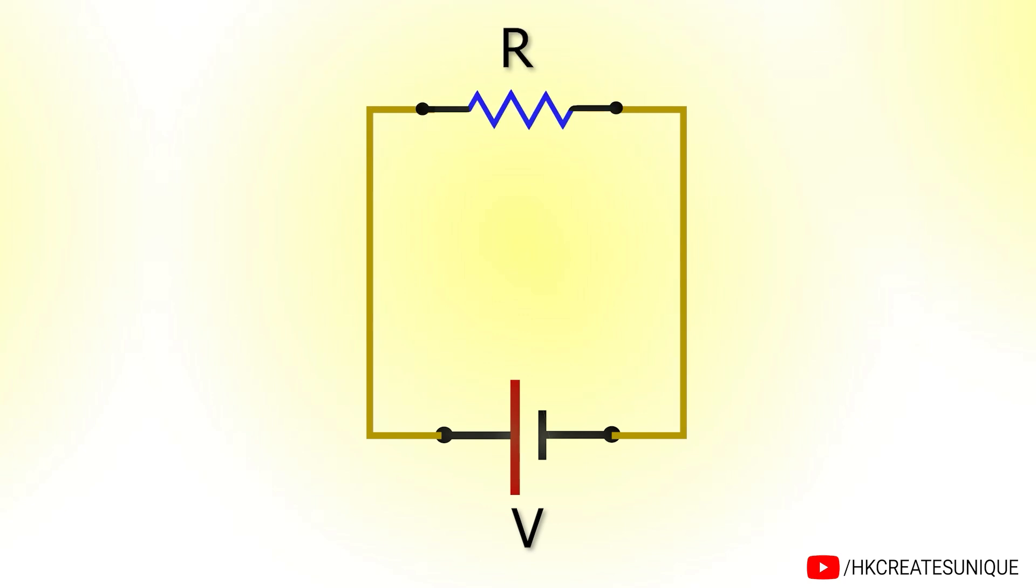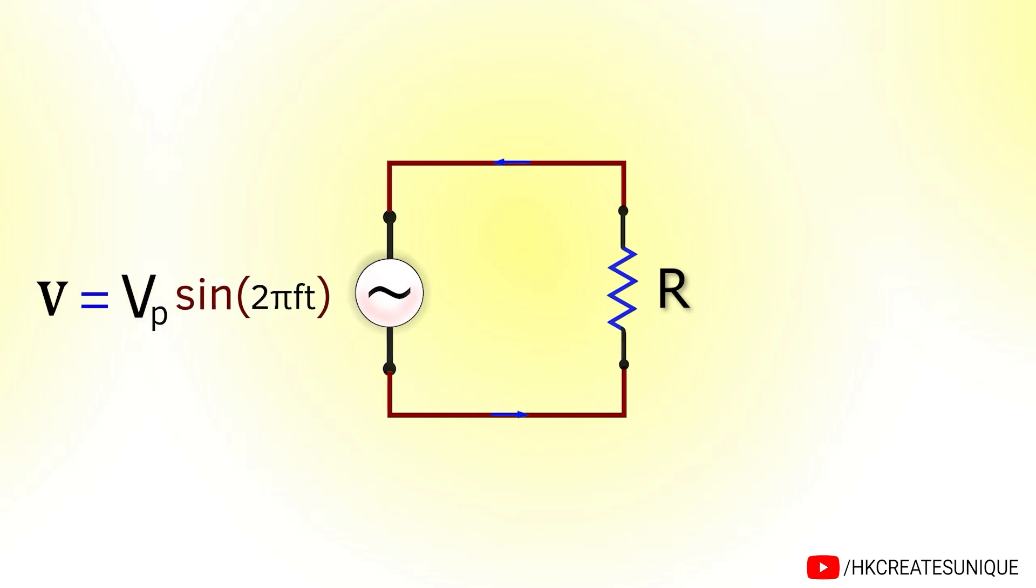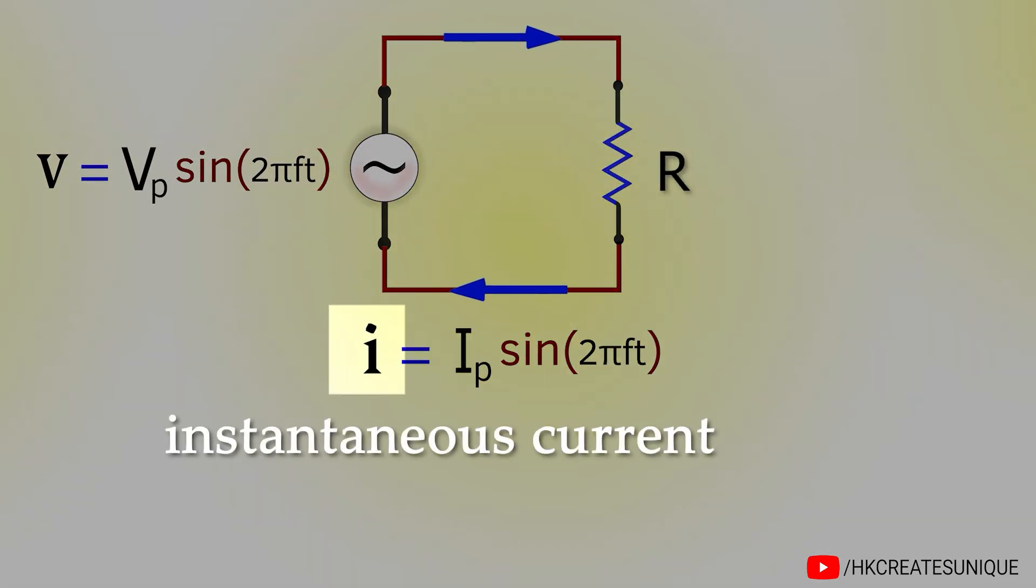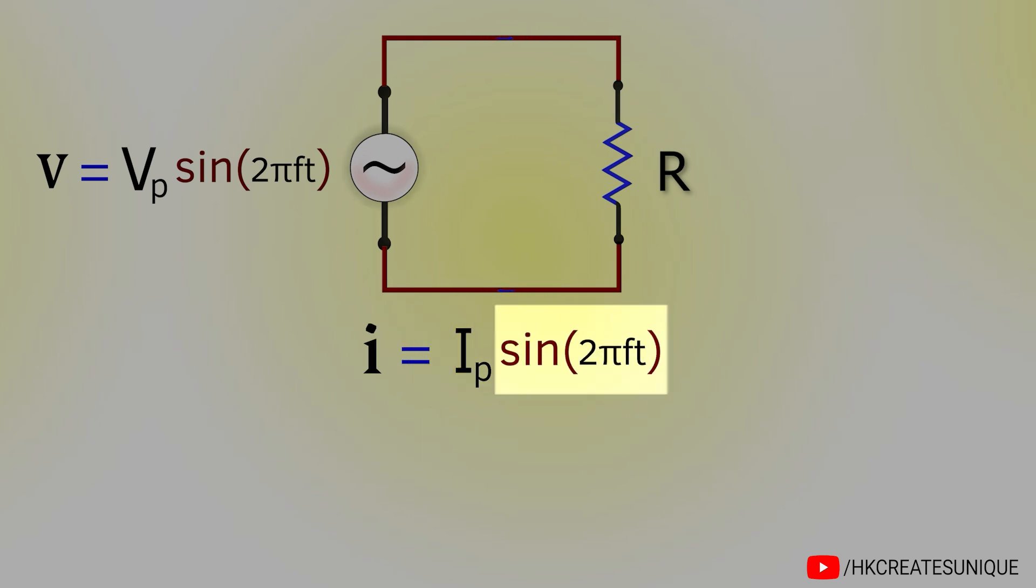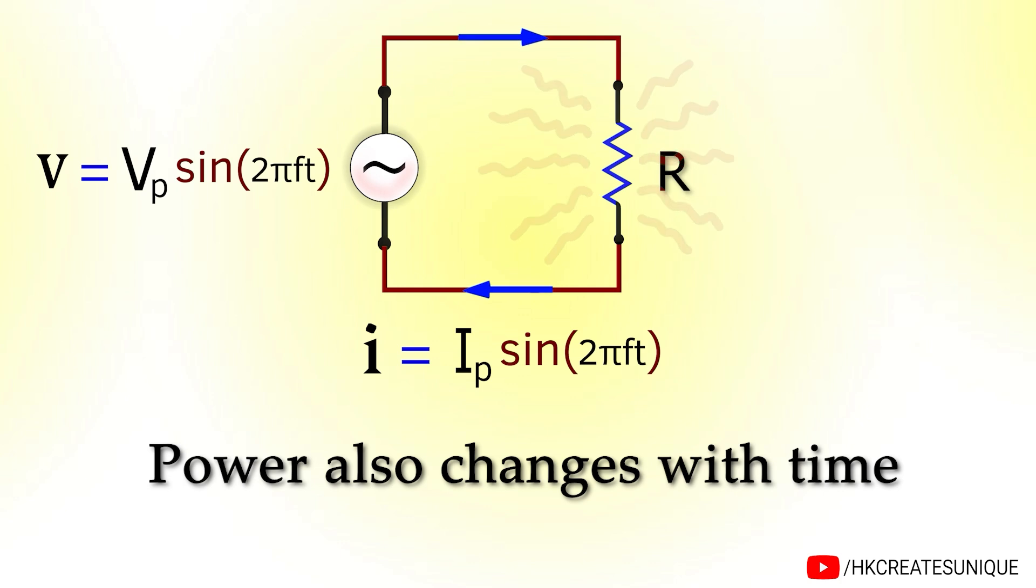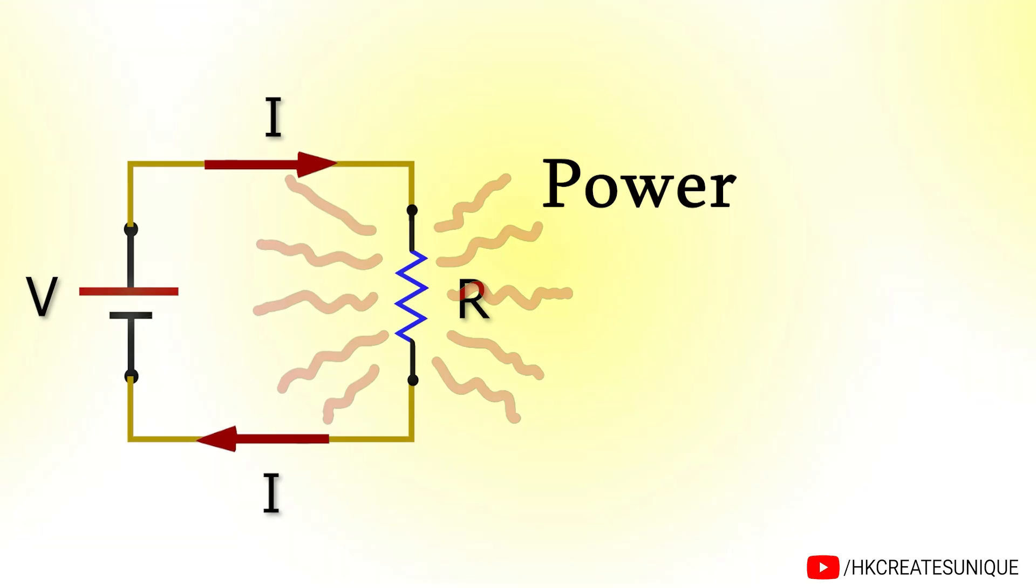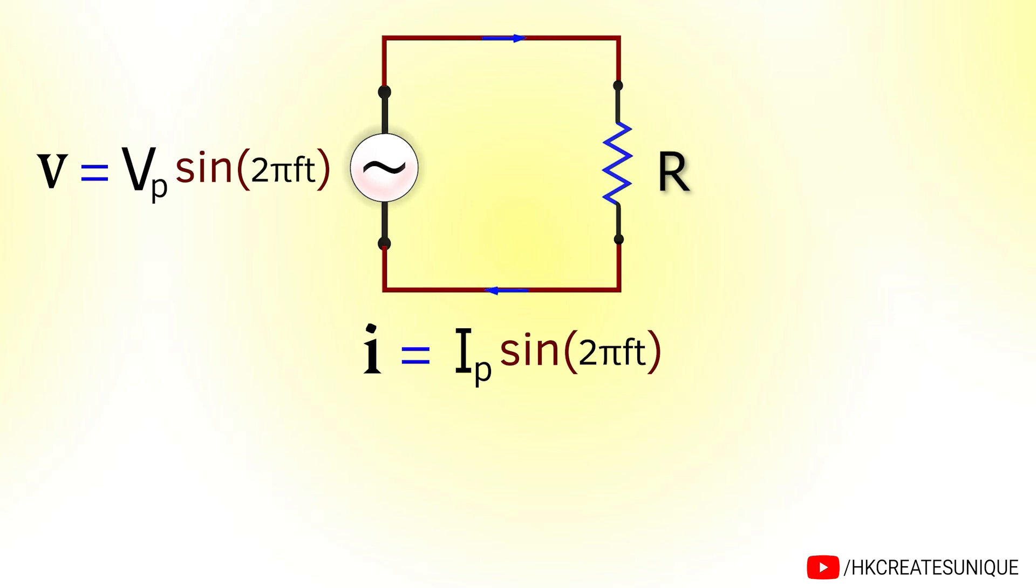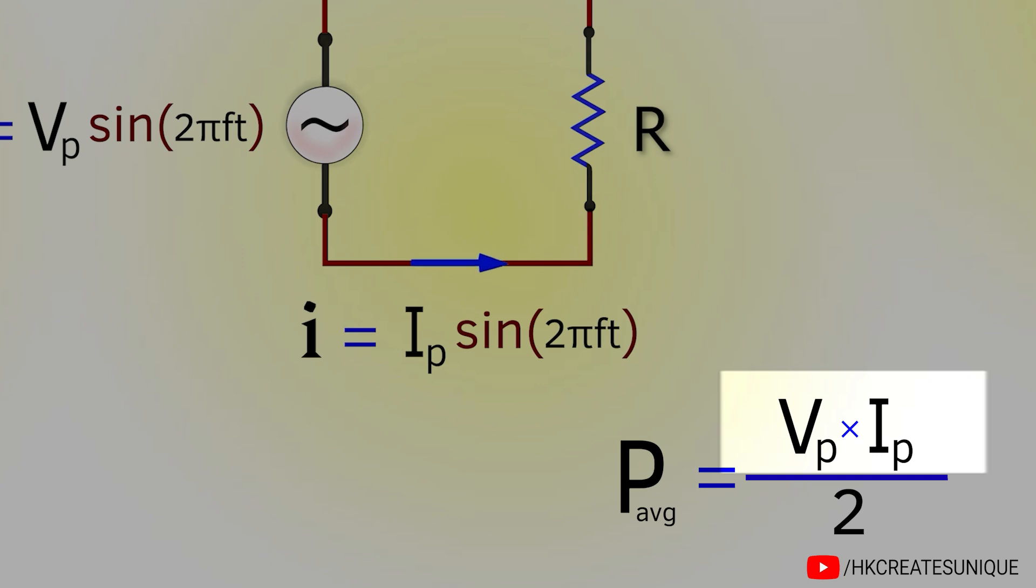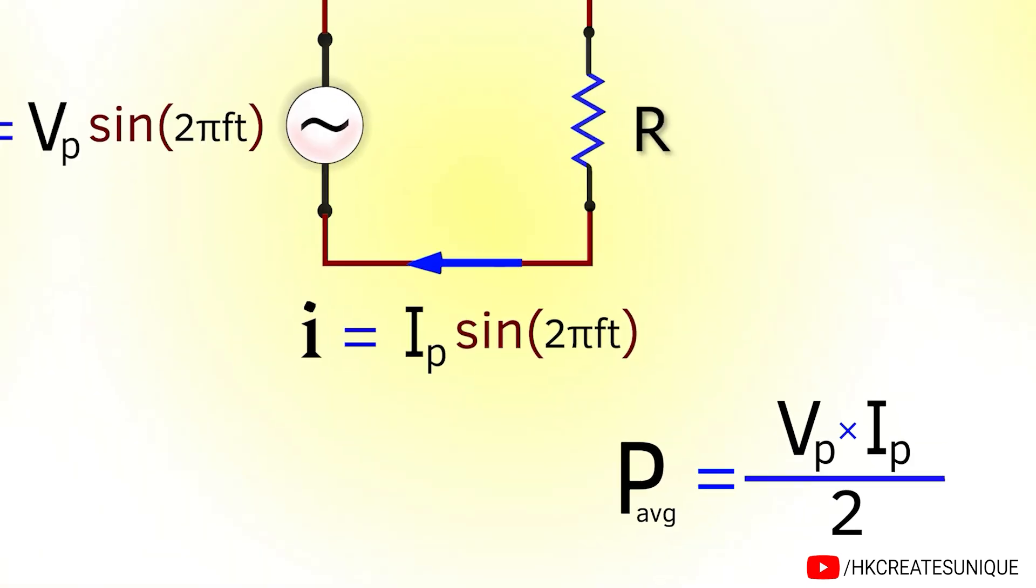When a battery is connected across a load, current flows through it and the load dissipates the power which equals product of voltage and current. Similarly, in an AC circuit of sinusoidal voltage source, if a resistive load is connected, sinusoidal current will flow. Given by instantaneous current lowercase i is equal to peak current i subscript p sin of 2 pi frequency t. Notice that both voltage and current are changing with time. So power also changes with time. So instead, average power is introduced. It is a constant value similar to power in DC circuits. It turns out that average power delivered in an AC circuit is product of peak voltage and peak current divided by 2. The derivation of this will be in the description box.